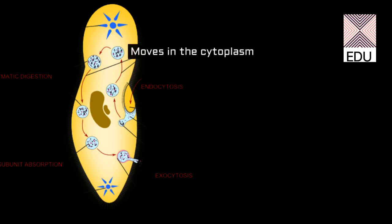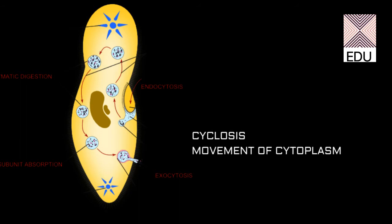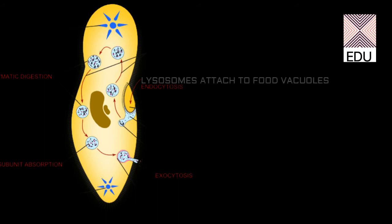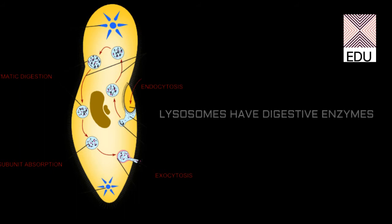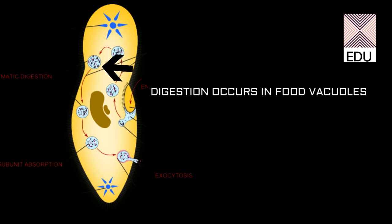Now this food vacuole revolves in the cytoplasm with the help of cyclosis. As we discussed in amoeba, cyclosis is the movement of the cytoplasm. During this movement of the food vacuole, lysosomes attach to these food vacuoles. Lysosomes contain enzymes.